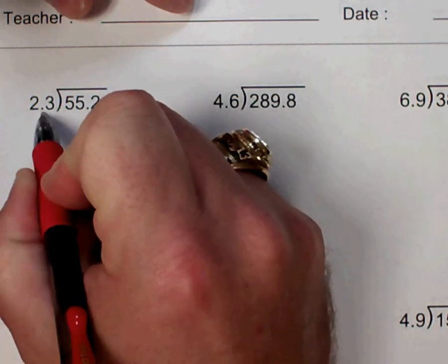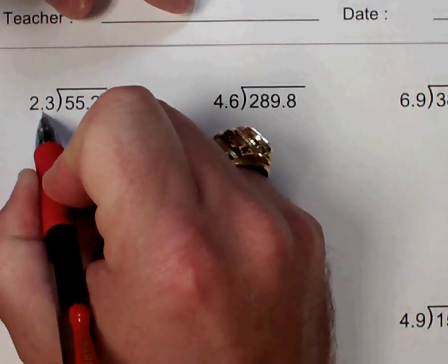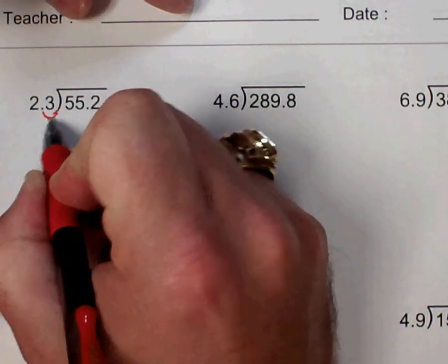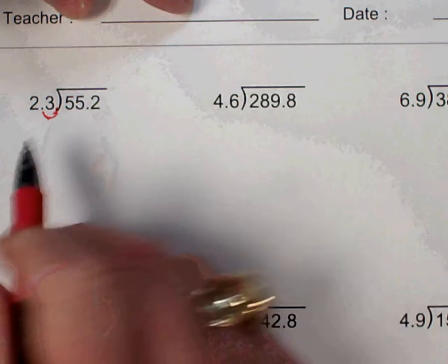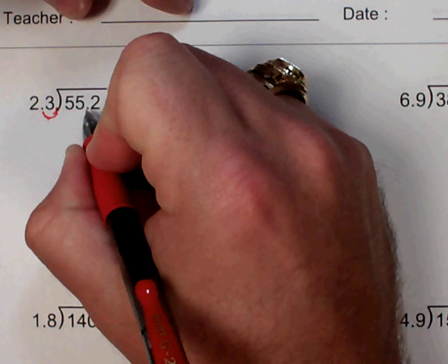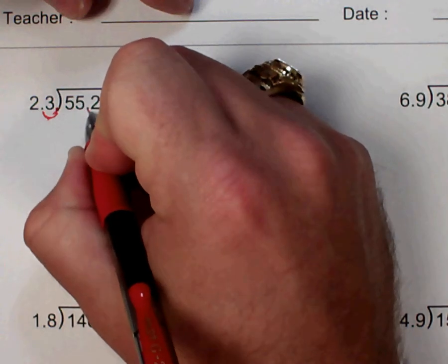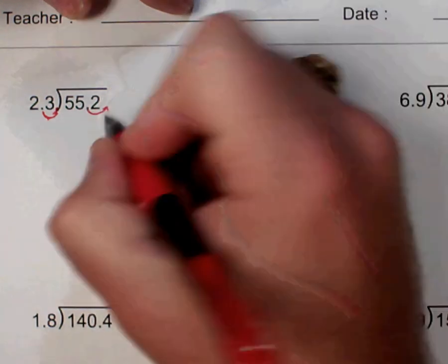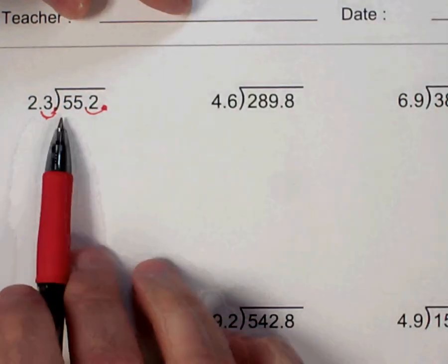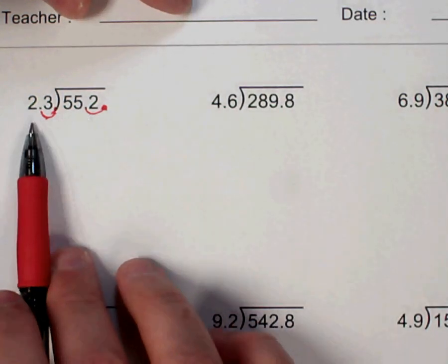So the easiest way to do that is just shift the decimal to this last spot here. Now because I moved the decimal one place here to the right, then what I'm dividing I need to also move one place to the right. And so my new problem becomes 553 divided by 23.